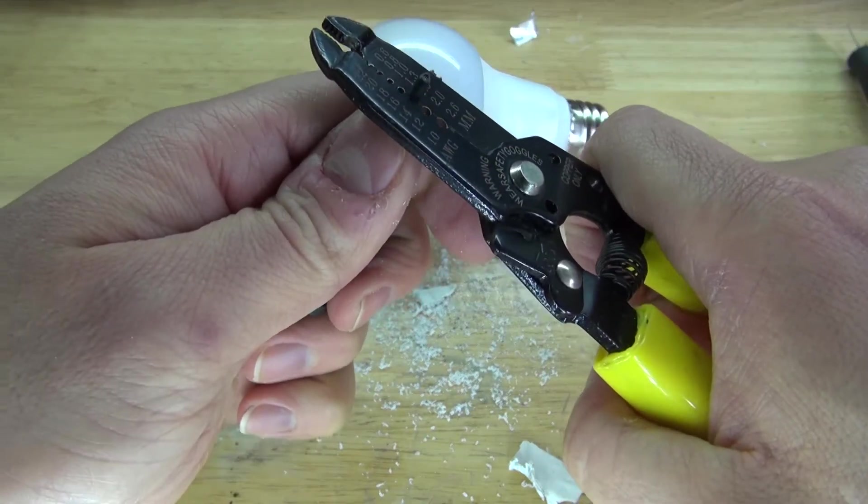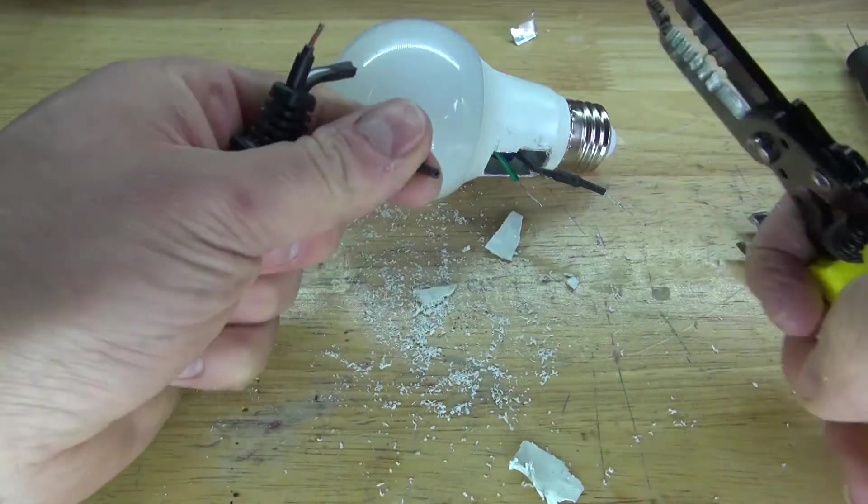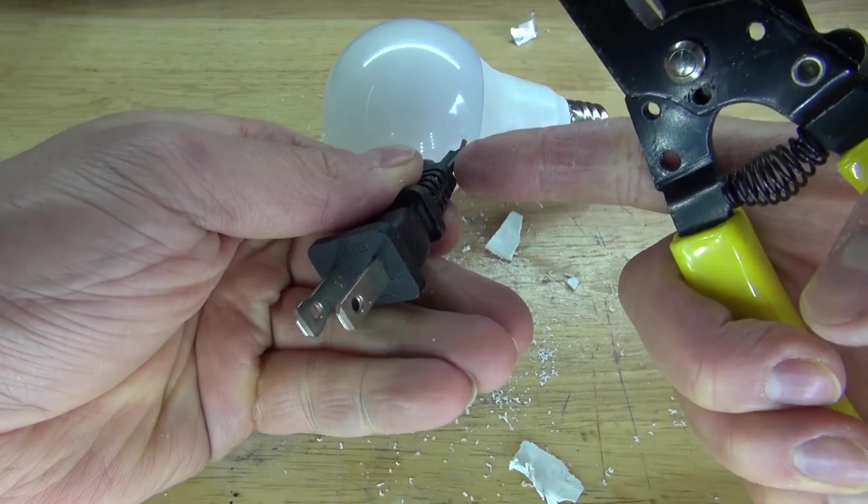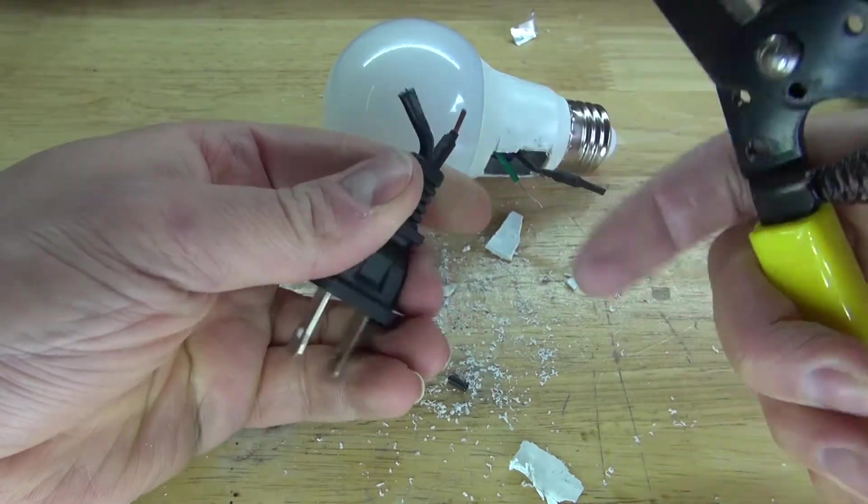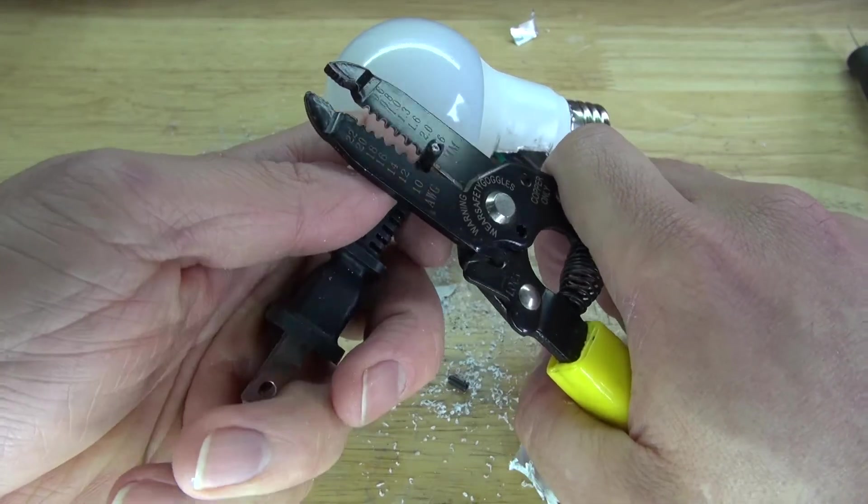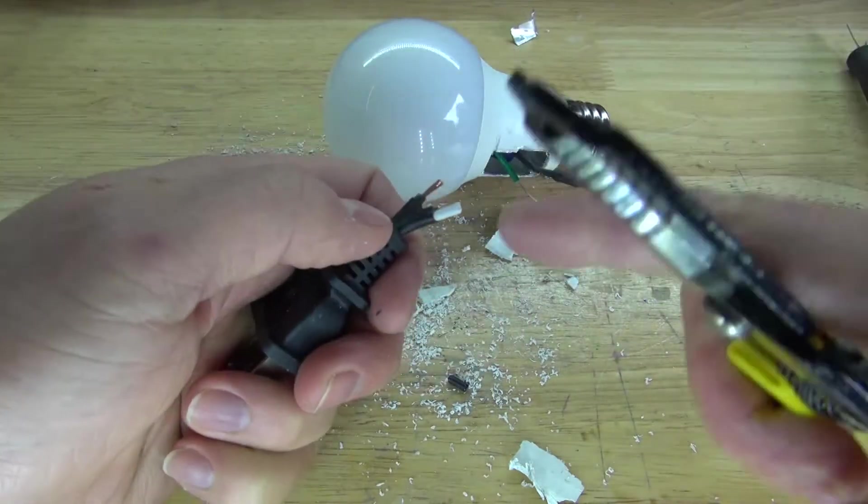Next take some wire strippers and separate the insulation and as you can see the black wire is the live wire which is connected here. And now remove the insulation on the second wire and as you can see the white wire is neutral.